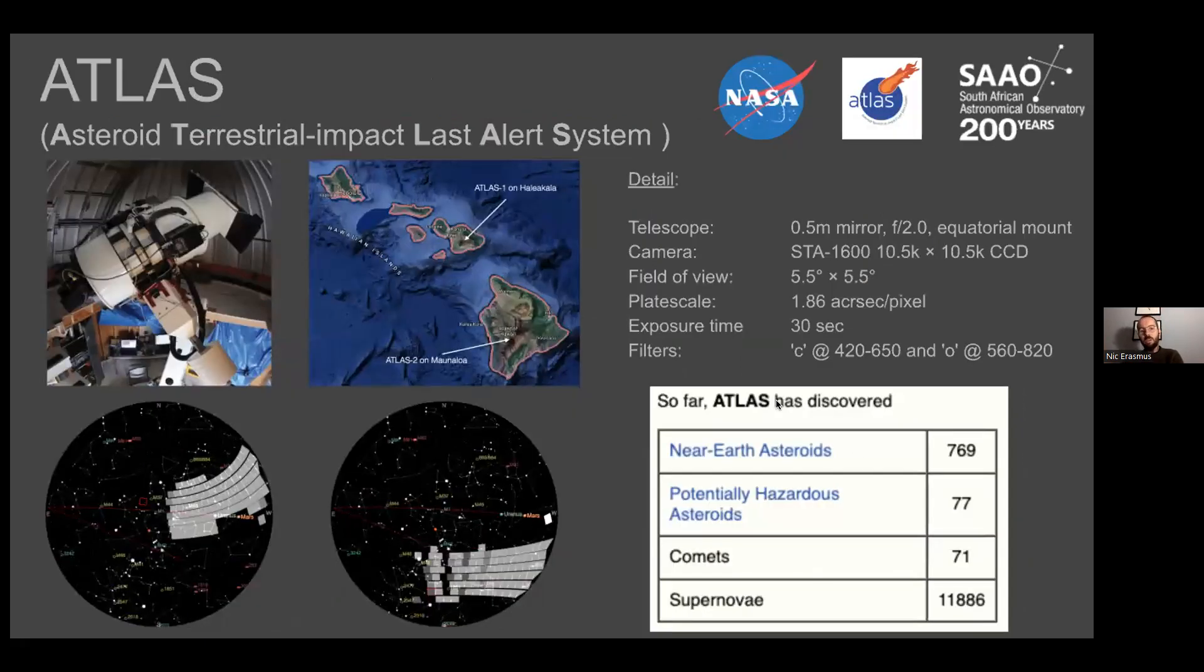So, ATLAS, the new kid on the block, I want to talk a little bit more about that. And so, ATLAS stands for Asteroid Terrestrial Impact Last Alert System. And up until last year, it consisted of two telescopes, both located on two different islands in Hawaii. And so, it's designed and operated by the group of Professor John Tonry and Dr. Larry Denneau at the University of Hawaii. So, they designed the system. They operate all four telescopes, I'll get to them soon, but the two that are in Hawaii.